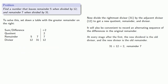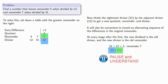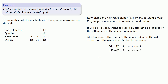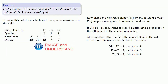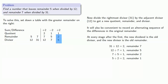At every stage after the first, the new dividend is the old divisor, and the new divisor is the old remainder. So our next step is 12 divided by 7, which gets us 1 with remainder 5. Our sum-difference changes sign to negative 2. Next, 7 divided by 5 gets us 1 with remainder 2, and the sum-difference becomes plus 2. Then 5 divided by 2 gives us 2 with remainder 1, and the sum-difference becomes minus 2. Then 2 divided by 1 gives us 2 with remainder 0, and the sum-difference is now plus 2.